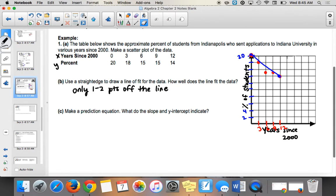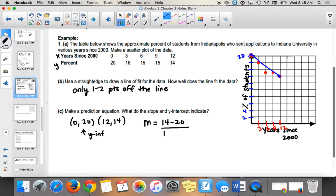So make a prediction equation. If I'm using the first and the last point, I have 0, 20 and I have 12, 14. I want to find the slope and then the y-intercept. Do I have one of those already? Do you guys see how this is the y-intercept? We have the y-intercept already. So our slope is going to be 14 minus 20 over 12 minus 0. So we get negative 6 over 12, which is negative 1 half.